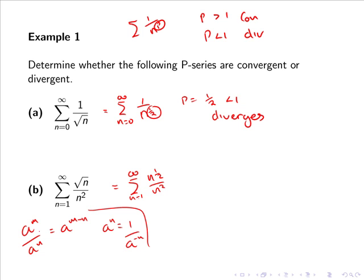Now if we apply the rules of indices, we have the sum from 1 to infinity of n to the half minus 2, or simply n to the minus 1.5.